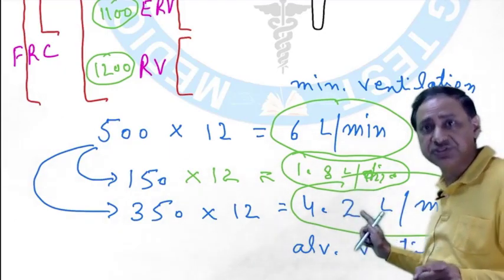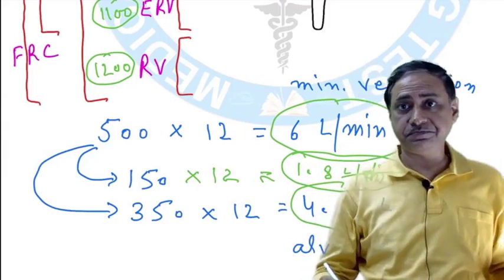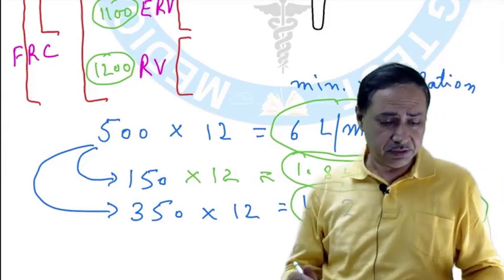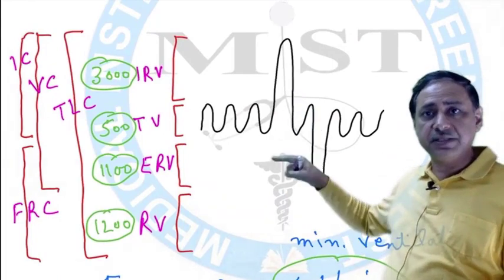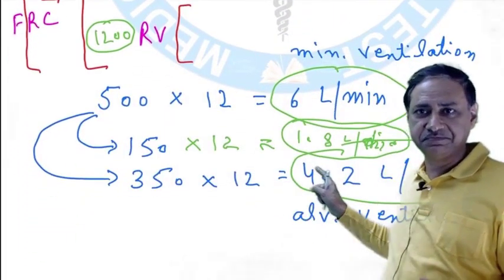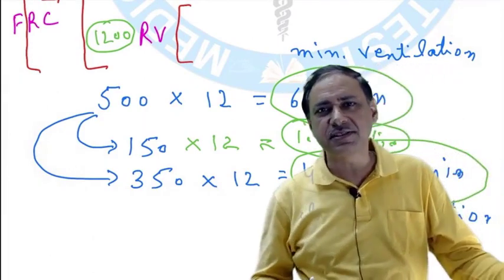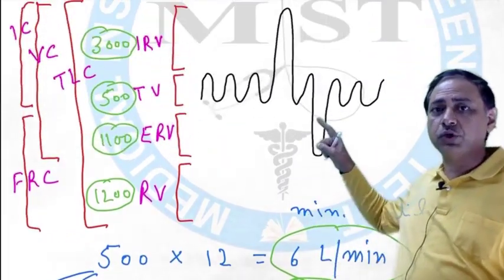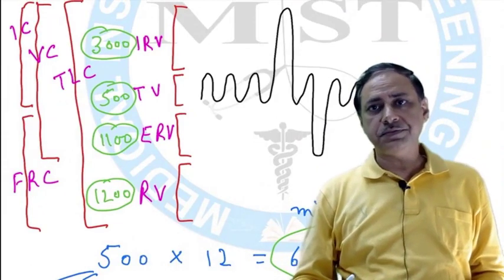This 4.2 L per minute is what will reach up to the level of the Alveolus. So try to remember the various volumes and capacities. Further details we may discuss in some other video, but this is the basic about volumes and capacities. Thank you very much.